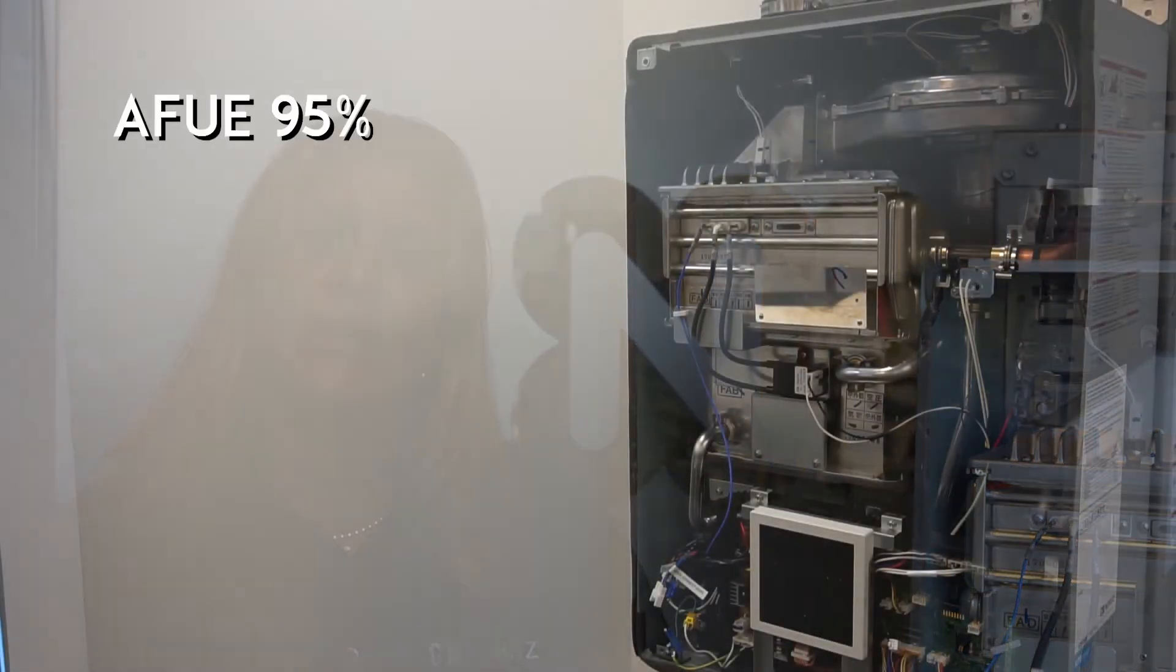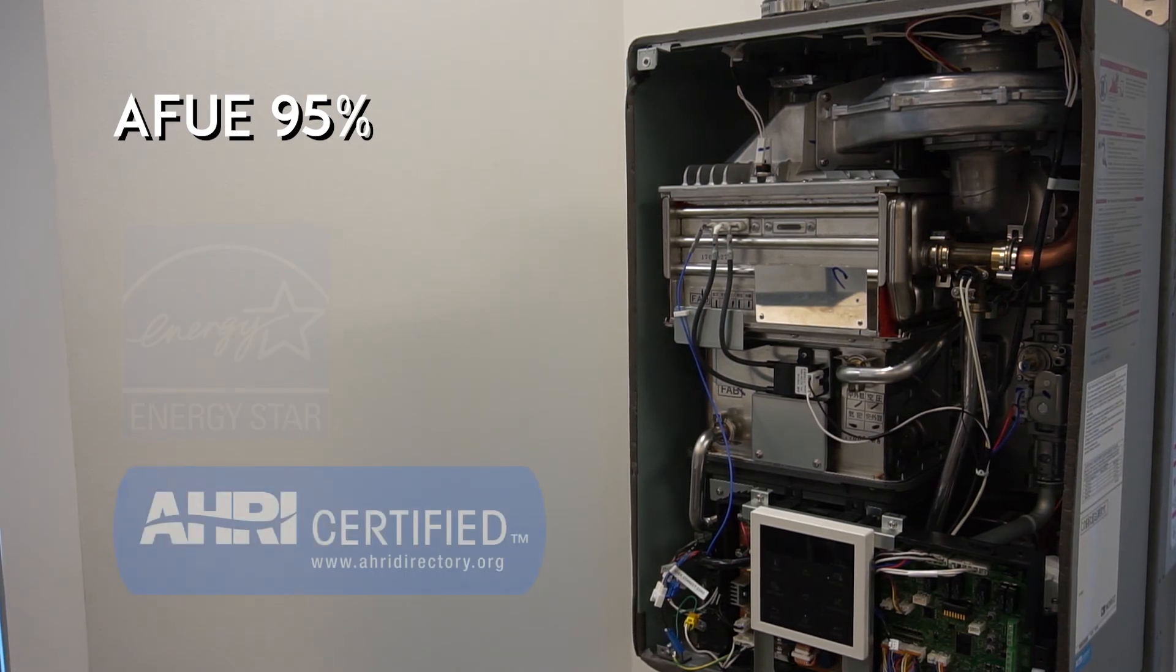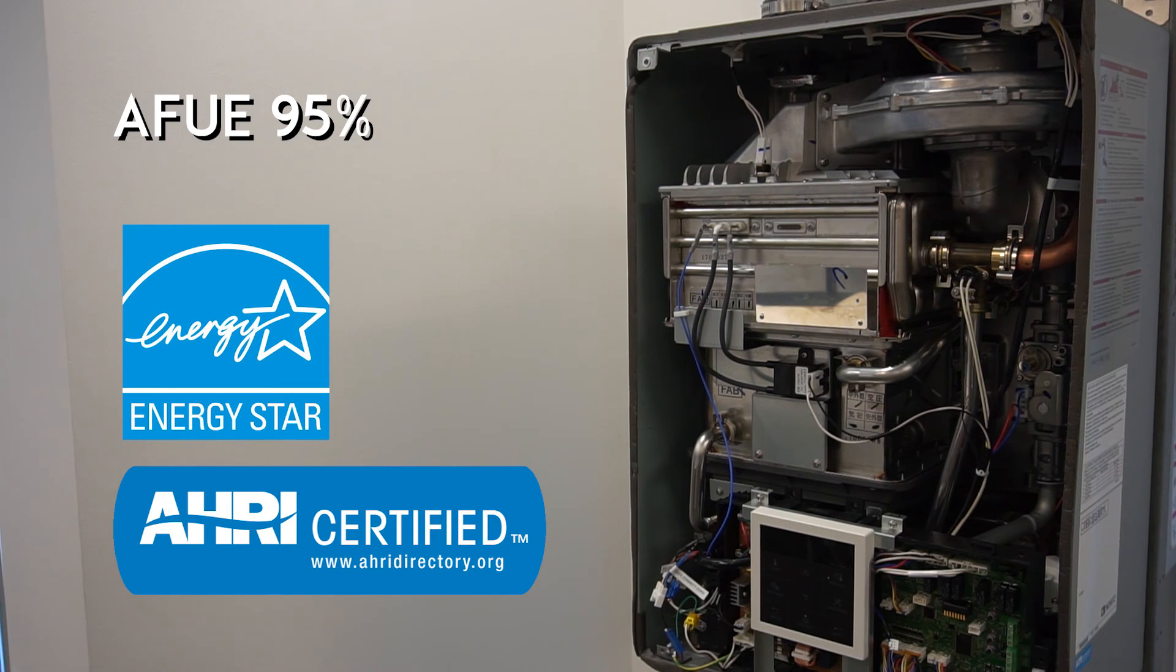The NRCB has an AFUE rating of 95% which qualifies us for AHRI and Energy Star Most Efficient. These certifications are used for rebates for the homeowners so they can get money back when installing our product.